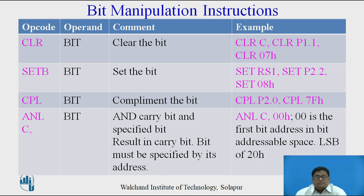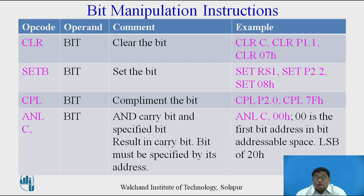The bit manipulation instructions in 8051 are as follows. The first instruction is CLR, which means clear the bit. The operand specifies the bit — nothing but one of the addresses from the bit addressable space — so the bit value must be between 00 and 7Fh. This instruction clears the bit. For example: CLR C clears the carry flag; CLR P1.1 clears the first bit of port 1; CLR 07h clears bit address 07, which is the MSB bit of byte address 20h.